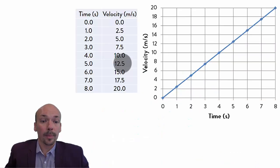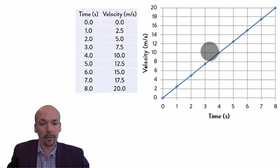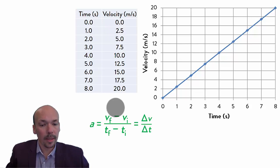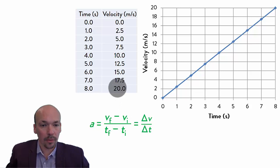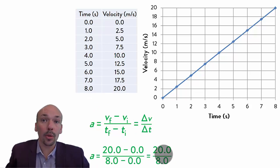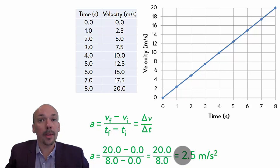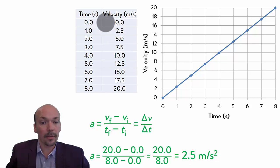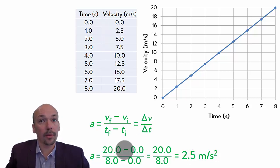Now an example. Returning to the previous example with the table and graph, we can calculate the acceleration from this movement using this equation. The final velocity was 20 meters per second and the initial velocity was 0, so 20 minus 0. The final time was 8 seconds and the initial time was 0, so 8 minus 0. So 20 divided by 8 equals 2.5 meters per second squared — and that is indeed the acceleration for this movement.